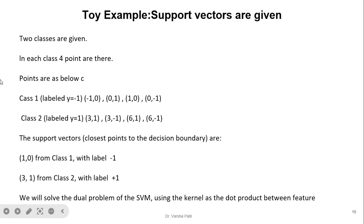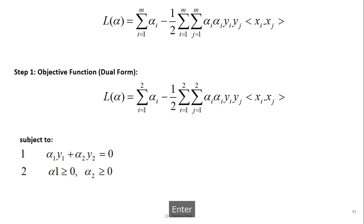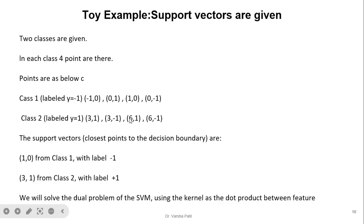In this toy example, two classes are given, each with four points. The four points with label minus 1 form the first class, and the four points with label plus 1 form the second class. The support vectors — the points closest to the decision boundary — are (1, 0) from class 1 and (3, 1) from class minus 1. Since this is a toy problem, we have already decided these support vectors. The data is linearly separable, so we use linear SVM with the dot product as the kernel.